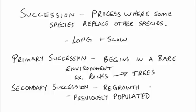Secondary succession is an area that's already populated with organisms. Something happens and many of the organisms are destroyed — it could be a forest fire. Secondary succession is the regrowth of all those organisms back into the environment.